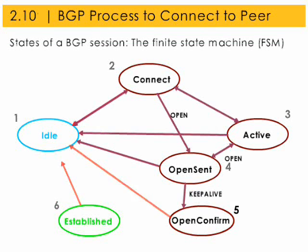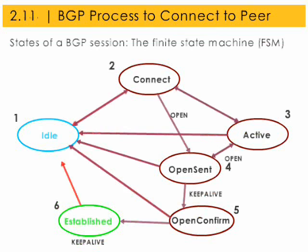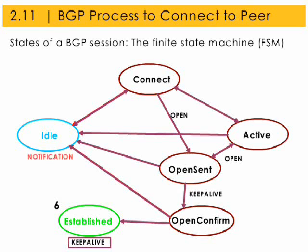In the open confirmed state, BGP waits for a keep-alive message and then changes its state to established, or if it receives a notification message, it changes its state to idle. Finally, in the established state, routes are exchanged and the BGP session is fully established. Keep-alive messages are sent until a notification message transitions the session to the idle state.